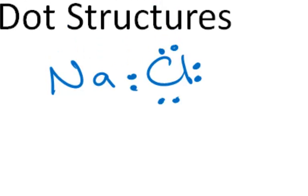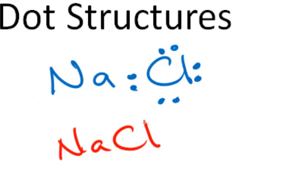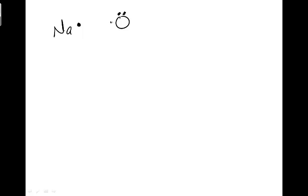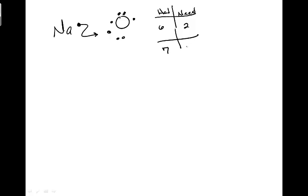Looking back at NaCl, the formula is NaCl because there's 1 atom of sodium and 1 atom of chlorine. Now let's look at sodium with 1 valence electron and oxygen with 6 valence electrons. Sodium gives up its electron to oxygen, but oxygen still doesn't have 8 — it now has 7, so it still needs 1 more. Originally oxygen had 6, needed 2; after the first sodium it has 7 and still needs 1. So a second sodium atom gives up another electron to oxygen. The chemical formula is Na₂O — 2 atoms of sodium and 1 atom of oxygen.